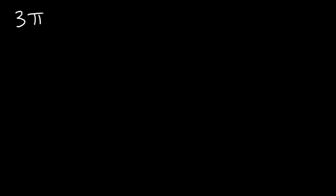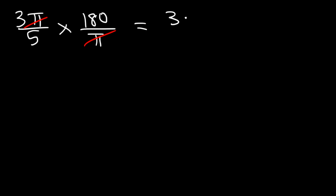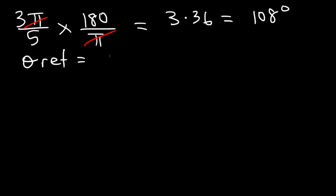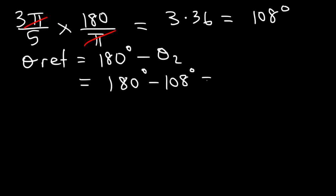What if it's not a common angle? For example, let's say 3π/5. To find the reference angle, we need to know what quadrant it's in. I recommend converting to degrees first. Multiplying 3π/5 by 180/π: 180 divided by 5 is 36, and 3 times 36 is 108. So 108 degrees is in quadrant 2, and to find the reference angle in quadrant 2, it's 180 minus 108, which gives us 72 degrees.